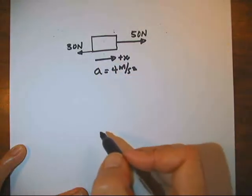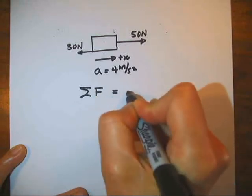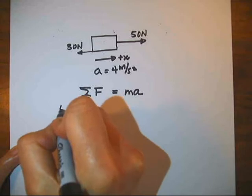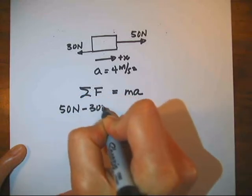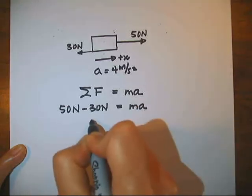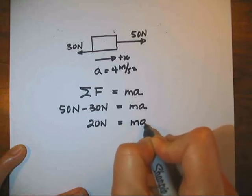Newton's second law says that the sum of the forces is equal to the mass times the acceleration. The forces include a 50 newton force to the right, which is positive, and a 30 newton force to the left, which is negative. The net force is 20 newtons, so the box has to have a mass of 5 kilograms.